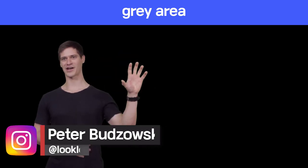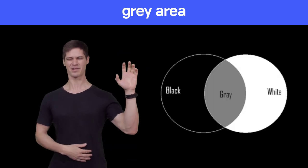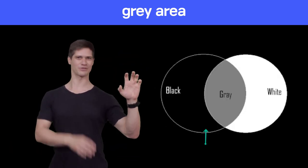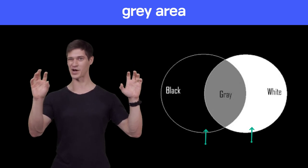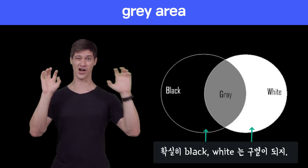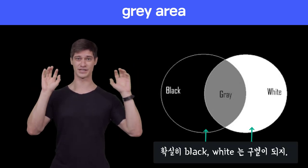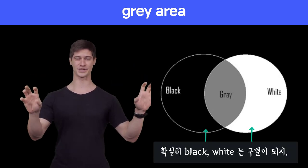Gray area. So, there's a black area, and it's black — you know it's black. And there's a white area, and it's white, and you know it's white, right? Very obviously, you can define these two areas.